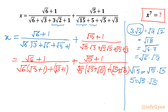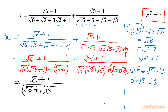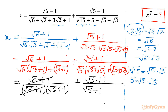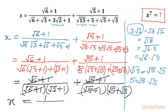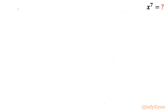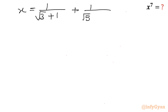Taking common factors, we write (√6 + 1) over (√6 + 1)(√3 + 1) plus (√5 + 1) over (√5 + 1)(√5 + √3). The (√6 + 1) and (√5 + 1) terms cancel, so x simplifies to 1 over (√3 + 1) plus 1 over (√5 + √3).